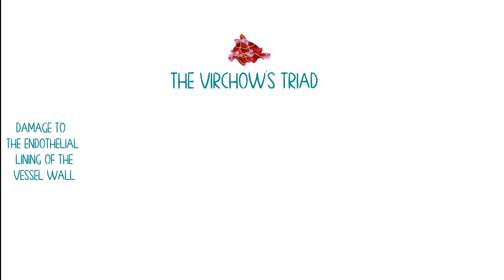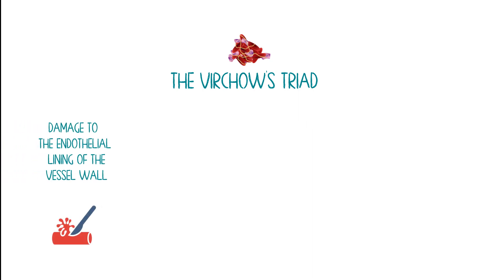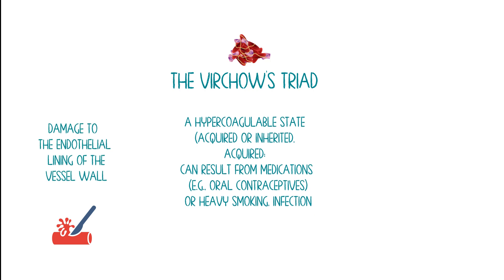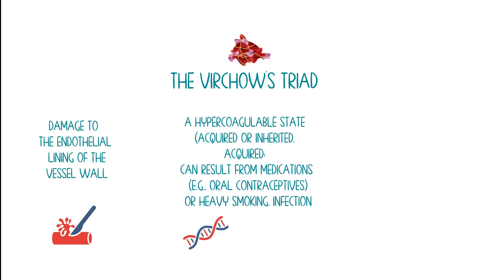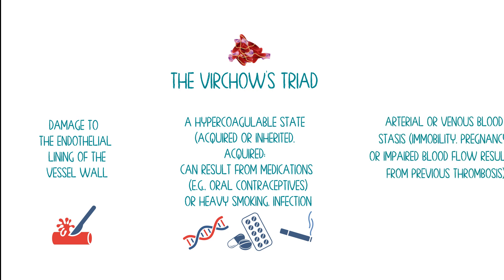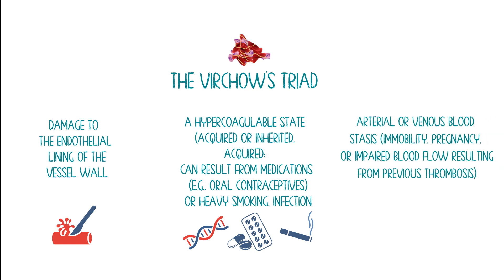This does not happen only when there is damage to blood vessels. According to Virchow's triad, the causes of thrombosis are: (1) damage to the endothelial lining of the blood vessel; (2) a hypercoagulable state, which can be acquired or inherited — acquired causes include medications like oral contraceptives, smoking, or infection; and (3) arterial or venous blood stasis, caused by immobility, pregnancy, or impaired blood flow resulting from previous thrombosis.